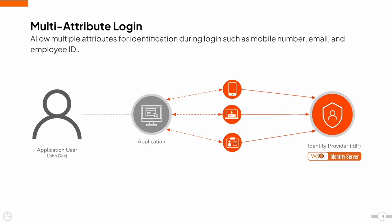When a user logs into an application, the default identifier the user is asked for is the username. With multi-attribute login, users can have the option of entering an alternate login identifier, such as a mobile number or an email address.